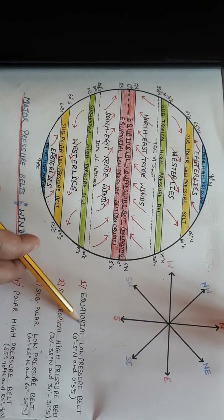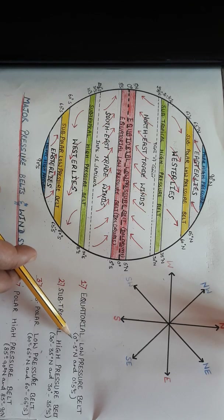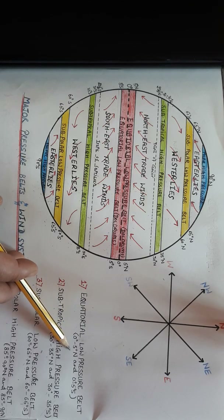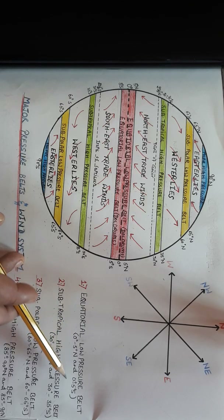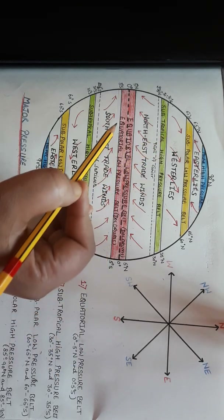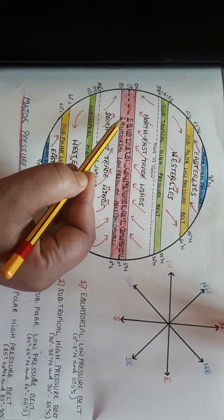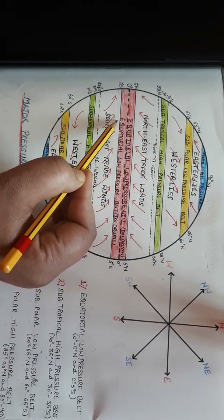Now where is this equatorial low pressure belt located? The location is 0 to 5 degrees north and 0 to 5 degrees south. See here — 0 to 5 degrees north and 0 to 5 degrees south — we have the equatorial low pressure belt.